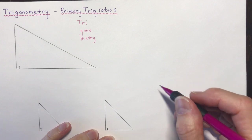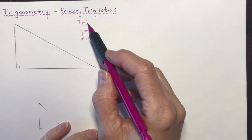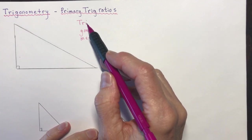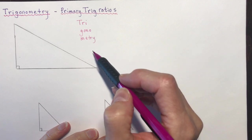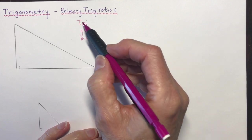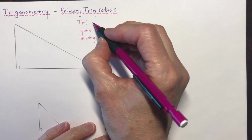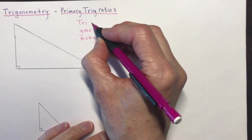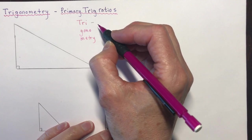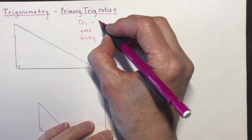First, we're going to look at the word trigonometry, which you can break down into three parts: tri, gono, and metri. Now tri, as you probably guessed, means three — tricycle, triathlon — so this means three.